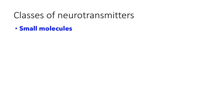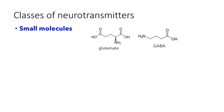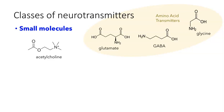Some of the most familiar neurotransmitters belong to the class called the small molecule neurotransmitters. This group includes glutamate, the major excitatory neurotransmitter in the brain; GABA, the major inhibitory neurotransmitter in the brain; and glycine, which is an inhibitory neurotransmitter common in the spinal cord. These three molecules are amino acids, so this trio gets the name amino acid transmitters. Another small molecule is acetylcholine — it is not an amino acid transmitter but it belongs to the group of small molecule neurotransmitters.